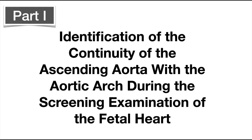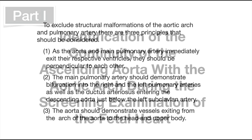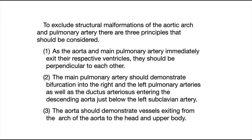Part 1: Identification of the Continuity of the Ascending Aorta with the Aortic Arch During the Screening Examination of the Fetal Heart. To exclude structural malformations of the aortic arch and pulmonary artery, three principles should be considered. First, as the aorta and main pulmonary artery immediately exit their respective ventricles, they should be perpendicular to each other. Second, the main pulmonary artery should demonstrate bifurcation into the right and left pulmonary arteries as well as the ductus arteriosus entering the descending aorta just below the left subclavian artery. Third, the aorta should demonstrate vessels exiting from the arch of the aorta to the head and upper body.